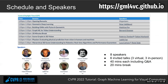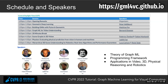In today's tutorial, we will have speakers presenting six talks — three virtual and three in-person. Each talk will be 15 minutes long, including the Q&A session. After the first three talks, we will have a 13-minute break, followed by the next three talks. We will cover the core series of graph machine learning and one of the most popular graph machine learning programming frameworks, as well as applications in video, 3D, physical reasoning, and robotics.